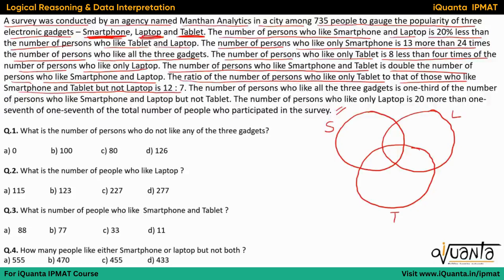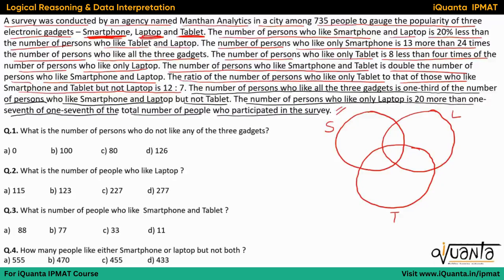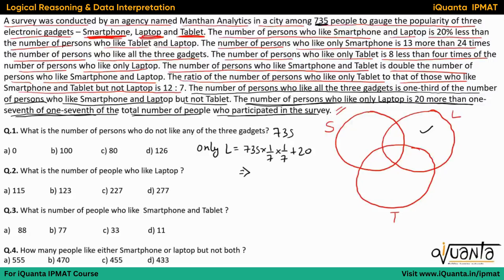Now let us try to assign the value of each region. The number of persons who like all three gadgets is one third of the number of persons who like smartphone and laptop but not tablet. The number of persons who like only laptop is 20 more than one seventh of one seventh of one seventh of the total number of people who participated in the survey — that is 735 people. So only laptop equals one seventh of one seventh of one seventh of 735, plus 20, which comes out as 35.